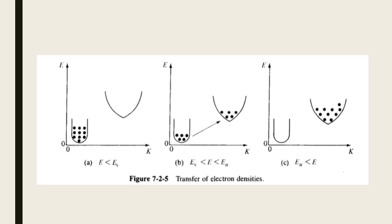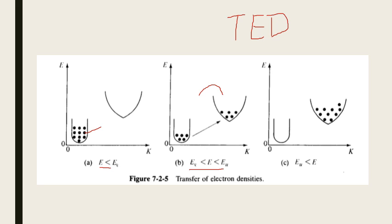The same Gunn diode behavior has been explained with a diagram. When the applied electric field is less than the lower valley field, electrons remain in the lower valley. When it is greater than the lower valley but less than the upper valley, some electrons transfer to the upper valley. When it exceeds the upper valley field, all electrons are transferred — and during this process the diode behaves as a transferred electron device.